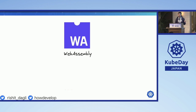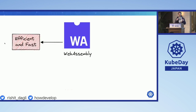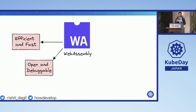That brings us to some of the main key features of WebAssembly. The first is that it is super efficient and fast — WebAssembly bytecodes are super small, which allows them to run very efficiently. This is one of the biggest use cases we'll see when comparing it against standard Docker images or containers. The other key feature is that it's open and debuggable — the entire WebAssembly ecosystem is completely open source, powered by the Bytecode Alliance, which is the governing body for WebAssembly, and all surrounding protocols are regularly discussed at Bytecode Alliance meetings.